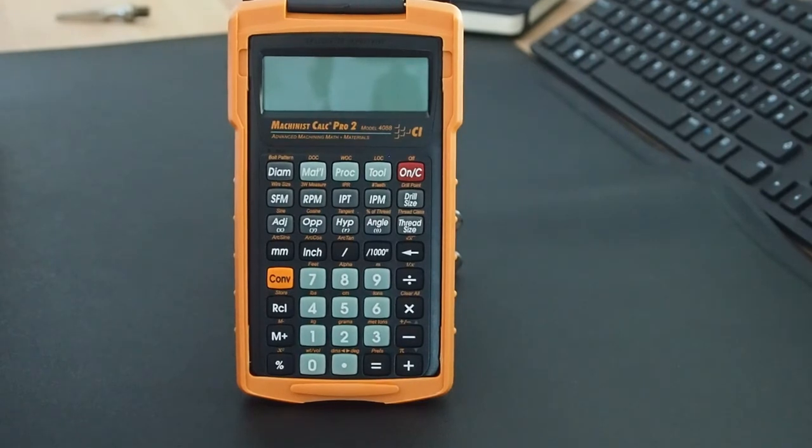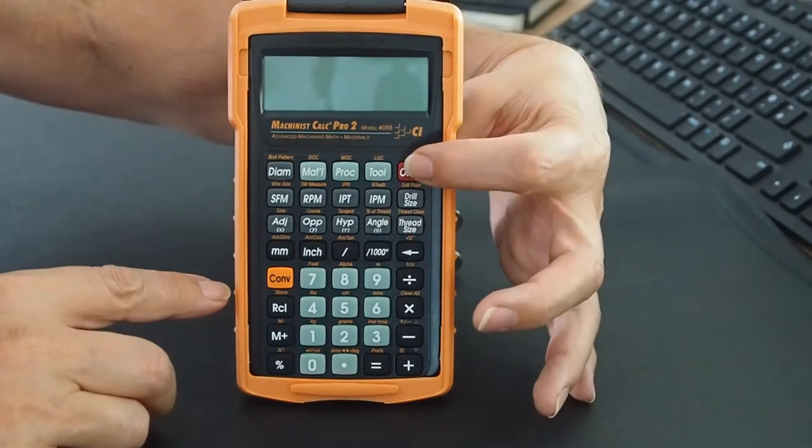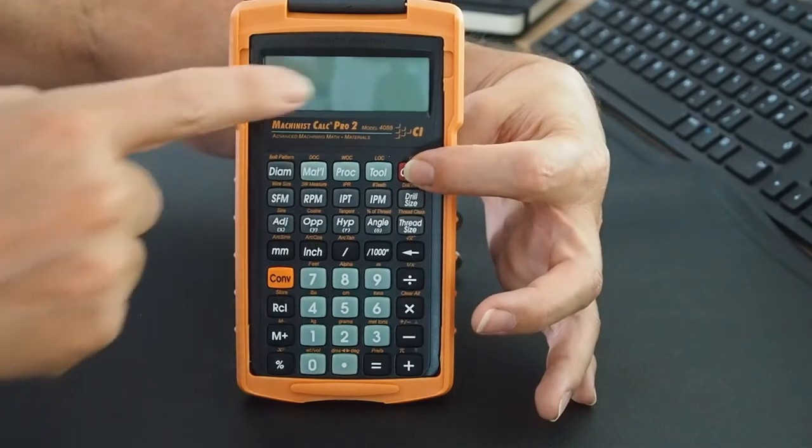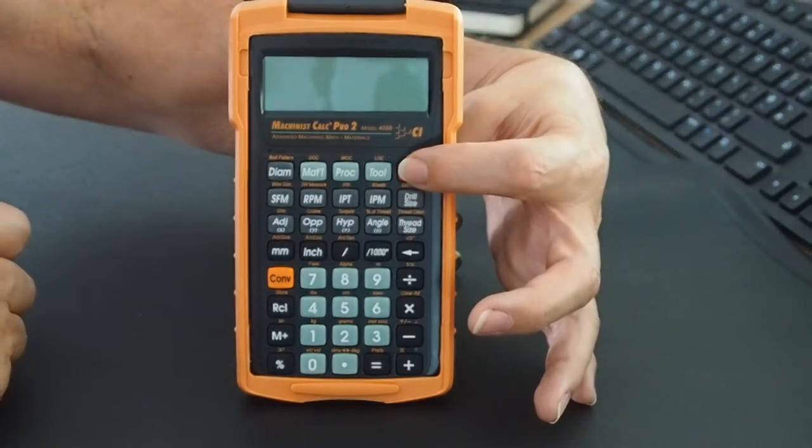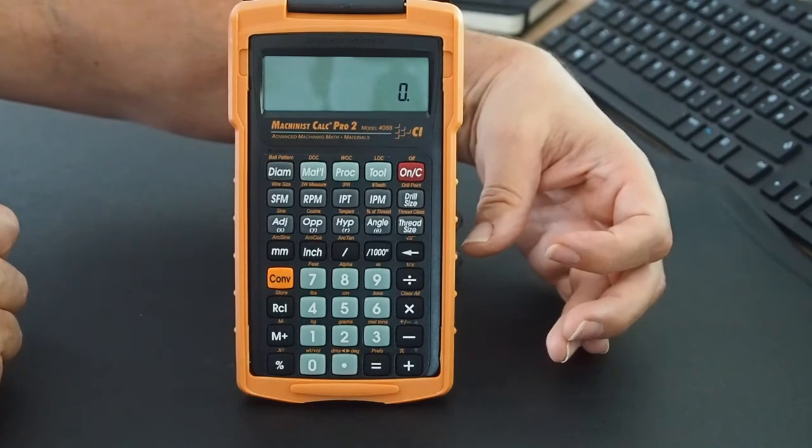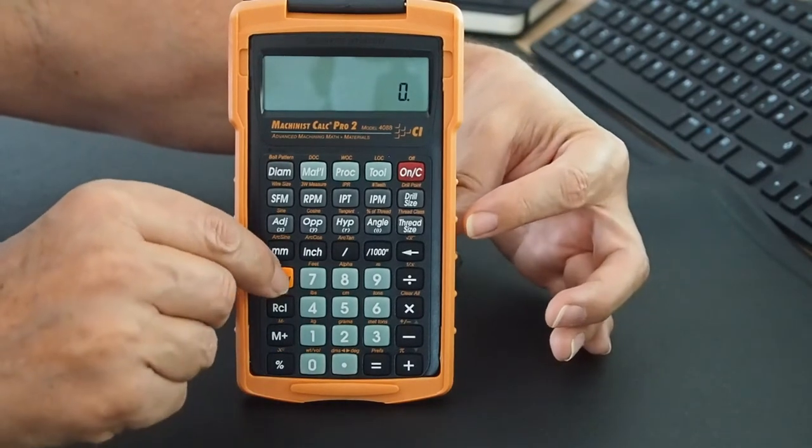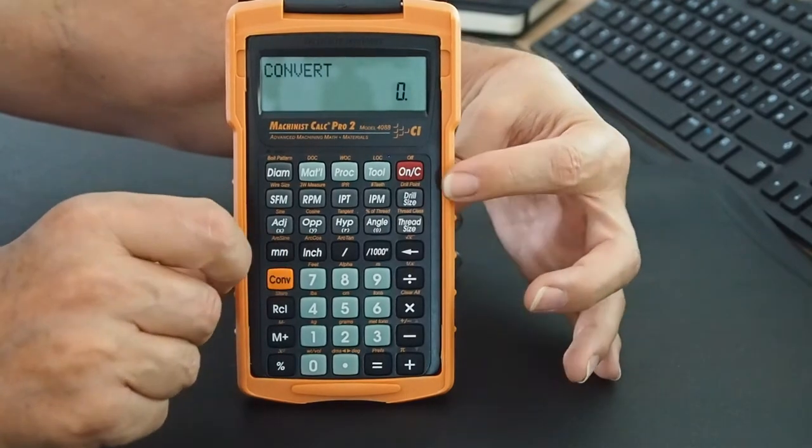So, a super quick video today. There's one way to turn on the calculator and two ways to turn it off. To turn on, you simply press the red button that has the ON/C, and you should see the zero appear. To turn off, you press the orange CONVERT button followed by the ON button.